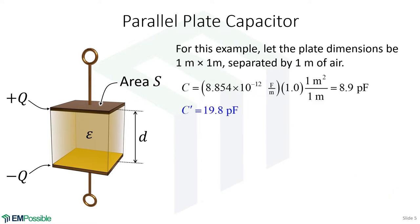For this example, the plates are one meter by one meter, separated by one meter of air. A typical capacitor would have a much smaller separation — more like one micron. So this is a somewhat unreasonable capacitor, designed to exaggerate the effect of fringing fields. The analytical equation ignoring fringing fields gives about 8.9 picofarads. Using Kirchhoff's approximation, we get almost 20 picofarads. How would we account for fringing fields in a more rigorous way? With a numerical solution.